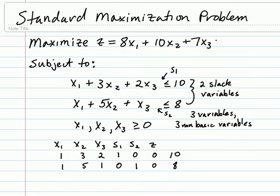We also need to rewrite our objective by moving all of the terms to the same side as z. In other words, that's -8x₁ - 10x₂ - 7x₃ + z = 0. Translating that into the last row of the tableau, we get -8, -10, -7. There is no s₁ or s₂. We have z, which is 1, and the constant is 0.